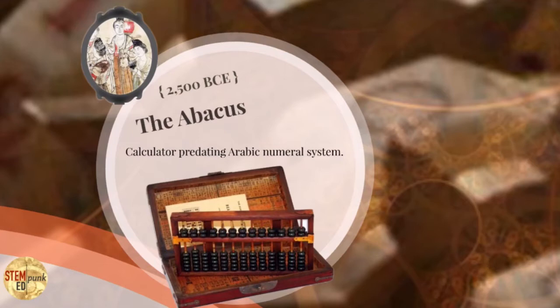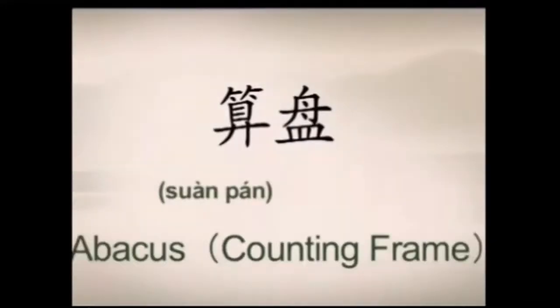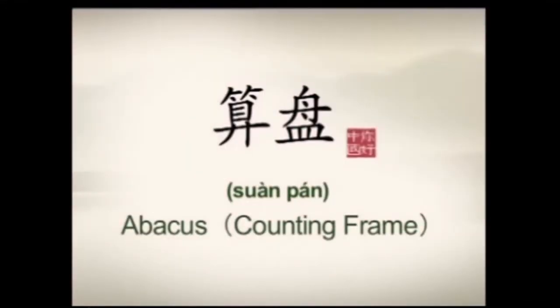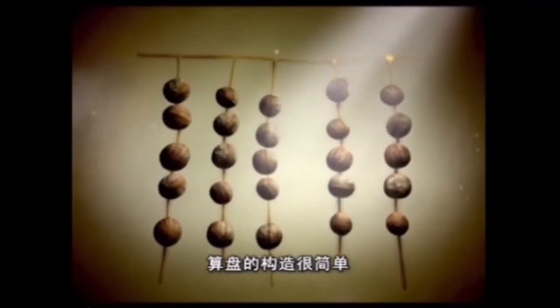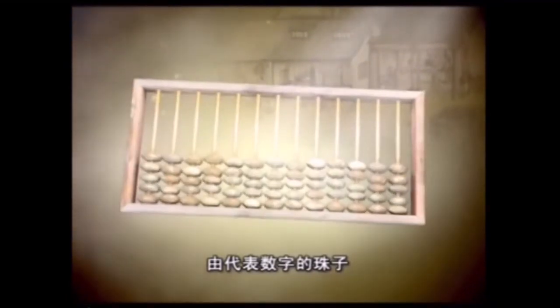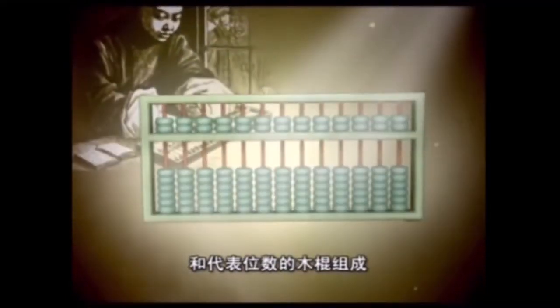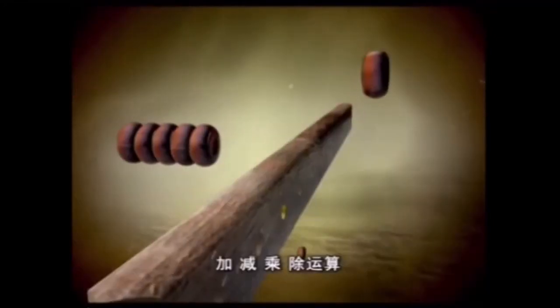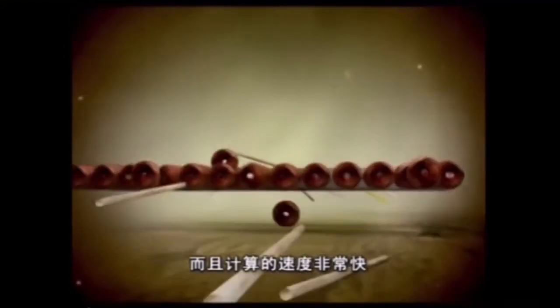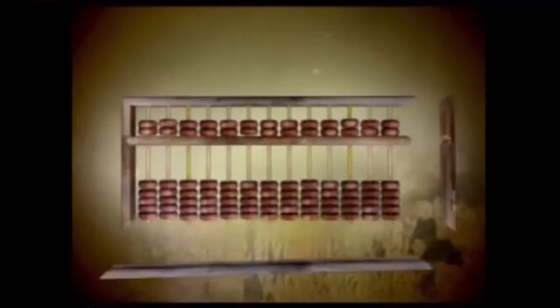Much later than 20,000 years ago, in 2500 BCE, the abacus became the more modern calculator. Let's take a closer look at how they're used even today. The structure of swan pan is quite simple. It is composed by beads, which represent numbers, and wooden sticks, which represent decimals. Swan pan can be used to accomplish complicated calculations quickly with simple formulas and rules.